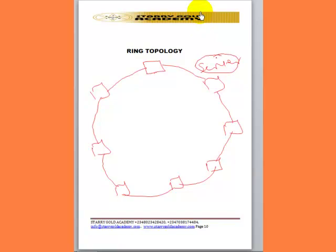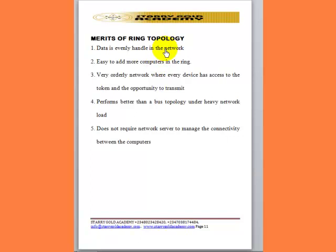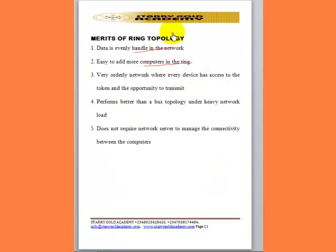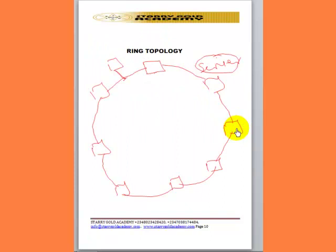The first advantage of ring topology is that data is evenly handled in the network, and it is easy to add more computers to the ring. Every device on the network has access to the token and the opportunity to transmit data. Since only one cable connects all computers together, during data transmission, each computer on the network has the opportunity to transmit.